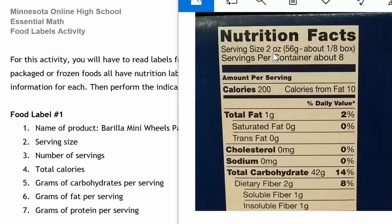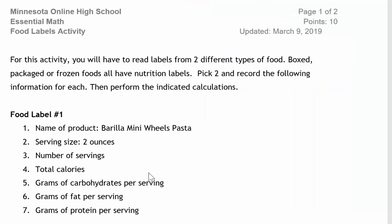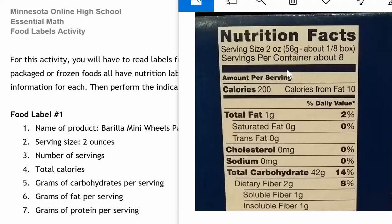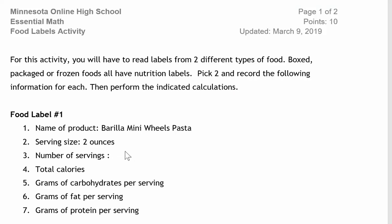So the serving size is towards the top. It says the serving size is two ounce. It also gives it in other units. Put down the one that makes the most sense to you. So two ounces for my serving size. Right below the serving size, it says servings per container. About eight. Usually you're going to get the word about as an estimate. Just put eight. So eight servings.